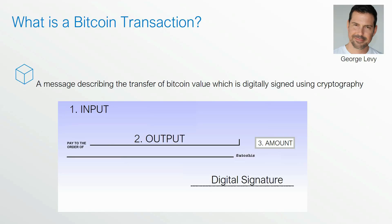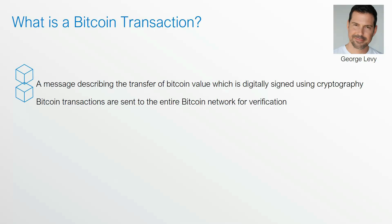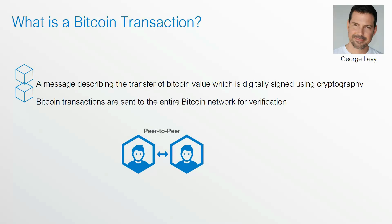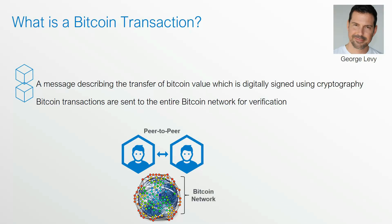That entire message needs to be digitally signed, and that's done using the private key of the owner of the Bitcoins. The wallet takes care of signing that transaction. Once Bitcoin transactions are created, they are sent to the entire Bitcoin network for verification. This is done on a peer-to-peer basis — when someone sends Bitcoin to someone else, the Bitcoin is sent directly to them, but the transaction is sent to the entire Bitcoin network for verification instead of sending it to a bank.